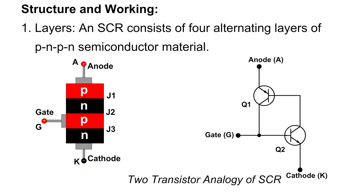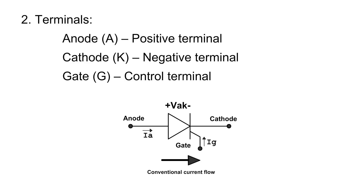Structure and Working. Layers: An SCR consists of four alternating layers of PNPN semiconductor material. Terminals: Anode (A) — positive terminal; Cathode (K) — negative terminal; Gate (G) — control terminal.